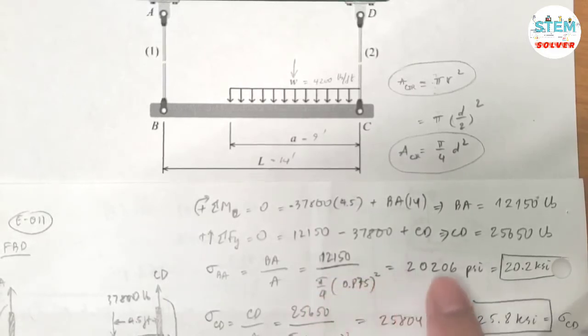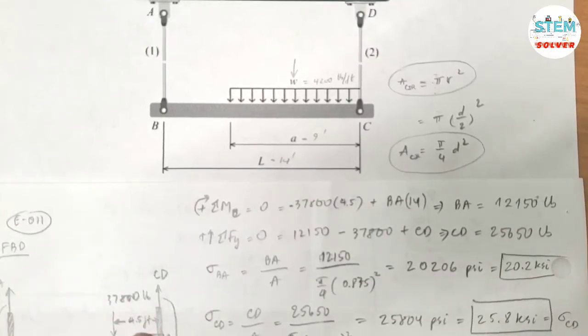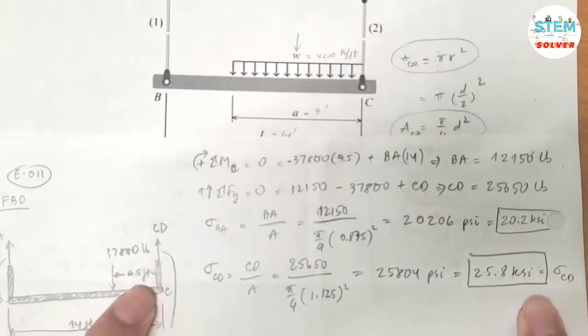So that's why I have pi over 4 times 0.875 square here because I am given the diameter. Calculate this one, I got 20,206 PSI, converted into KSI I got 20.2. Doing the same thing for rod CD, I got 25,804 PSI which is the same as 25.8 KSI.